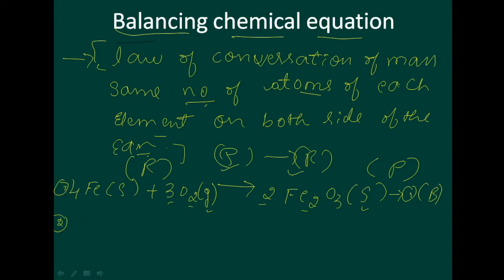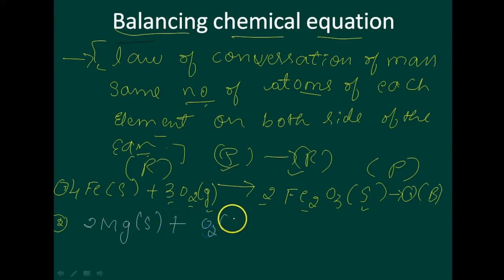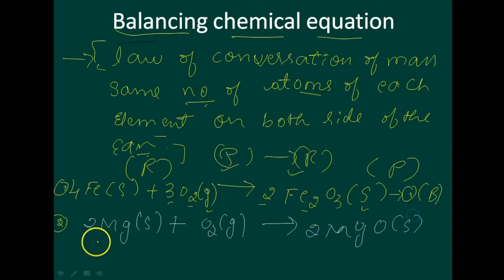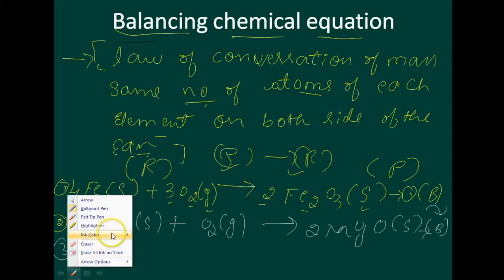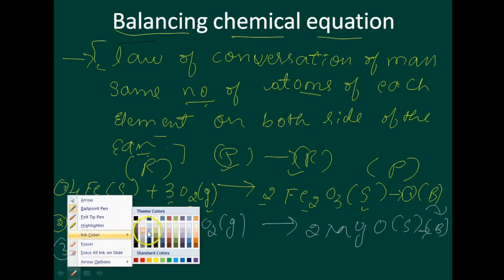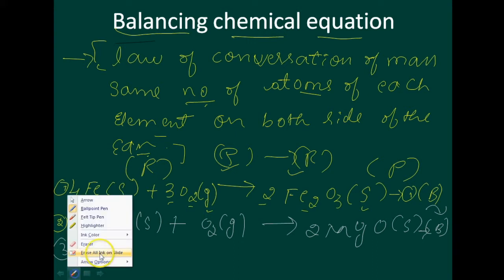The next one is 2 Mg, which is in solid state. Magnesium, when reacted with oxygen, gives 2 MgO, which is also in solid state. This is also a balanced equation.